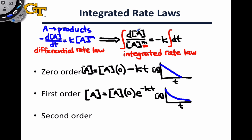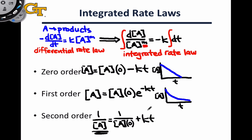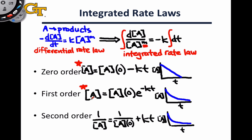In the second-order case, we're integrating dA over A squared, and the resulting integrated rate law is: 1 over A equals 1 over the initial concentration at time t equals zero, plus KT. Even though the plus sign makes it look like the concentration might be increasing, notice that we're dealing with 1 over A on the left-hand side, so this does indicate that the concentration is decreasing with time. If we plot time on the x-axis and concentration of A on the y-axis, we end up with an inverse-type decrease in the concentration with time.